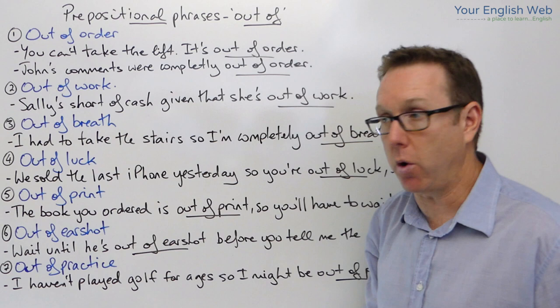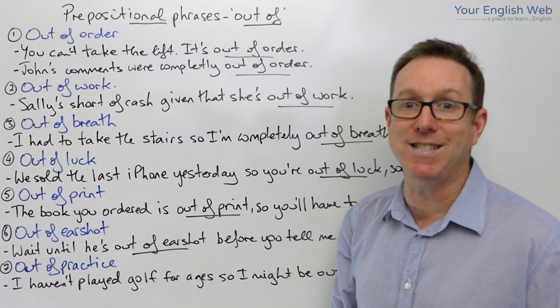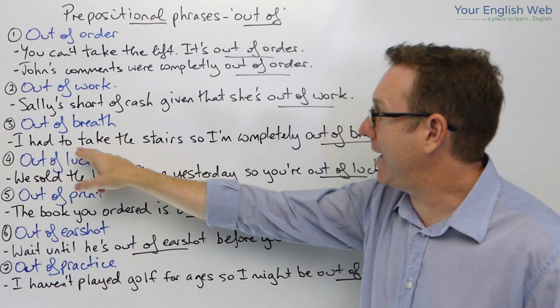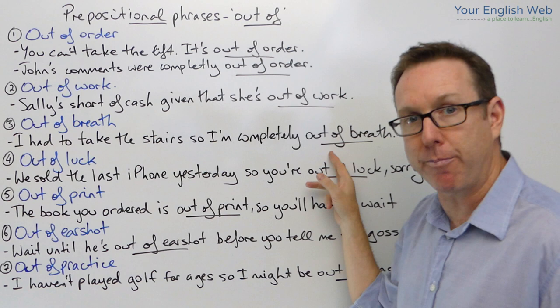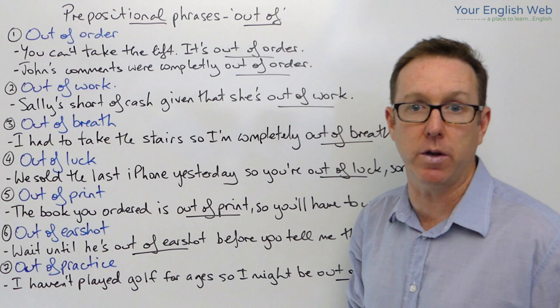The next one is 'out of breath'. If you're out of breath, it means that you're having trouble breathing because perhaps you've done some type of physical exercise where you have exerted yourself perhaps more than you should have. For example: 'I had to take the stairs, so I'm completely out of breath' — because the lift was broken, so I had to take the stairs, and now I'm out of breath.